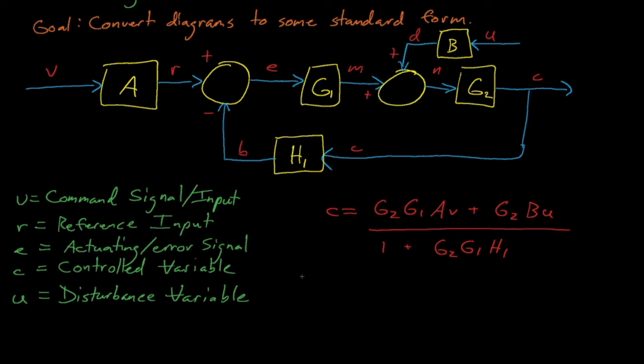If we go through all the math, we'll see that C is equal to G2 G1 A V plus G2 B U, all divided by 1 plus G2 G1 H1.